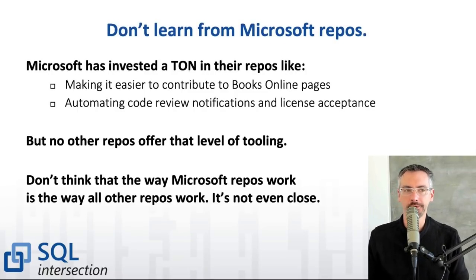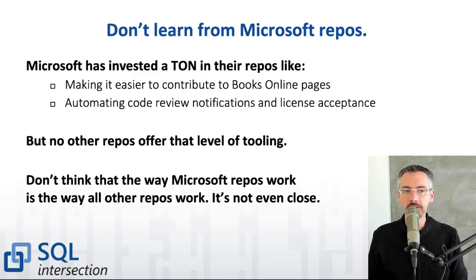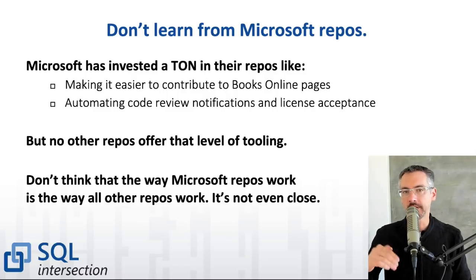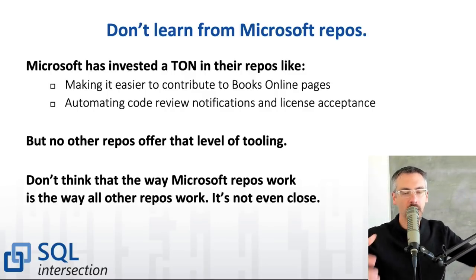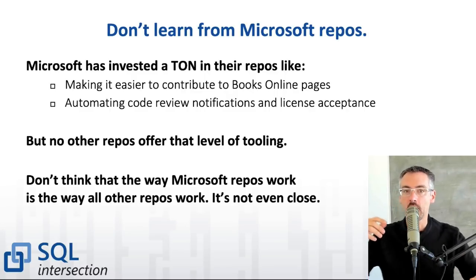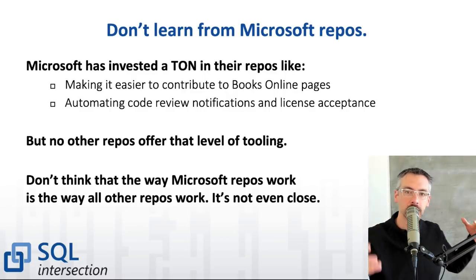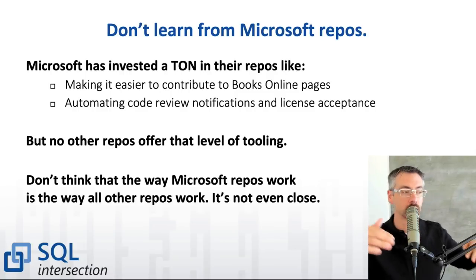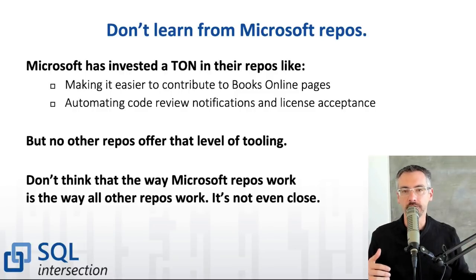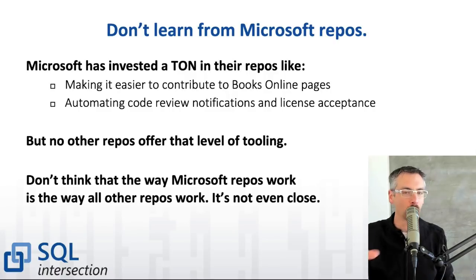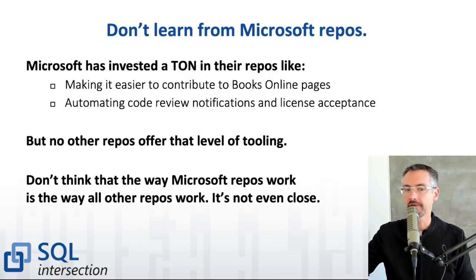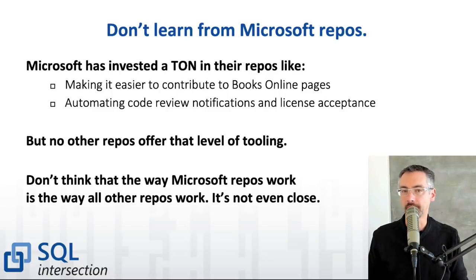In terms of branching, read the guidelines that each project has for how they want their branching done — which branch to start with, like master or dev — so you know how they expect their code and you'll get a much faster response. Don't learn from Microsoft's repos. I love Microsoft and they're doing an amazing job at GitHub, but because they have so much money, they're able to build all kinds of really cool automated tools — like complex workflows that give you automated notes about licensing requests and contracts. That works really well for them as a big for-profit company, but that's not how other repos work out in the world.